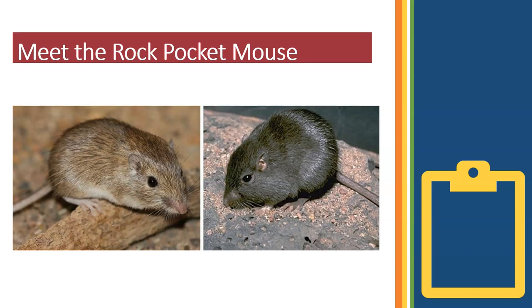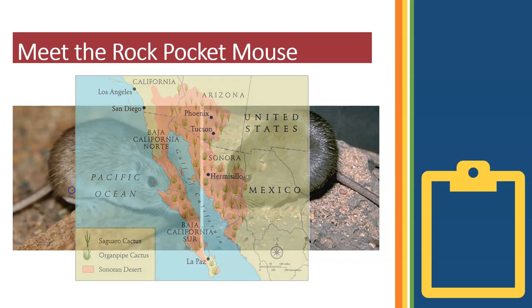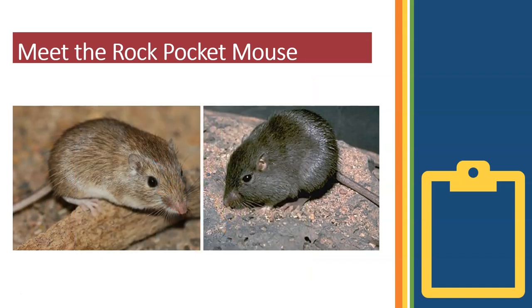You can find populations of rock pocket mice all over the Sonoran Desert in the southwest United States. You can see the desert landscape on this map shown in orange. There are two common varieties of mouse: a light colored variety on the left and a dark colored variety on the right.